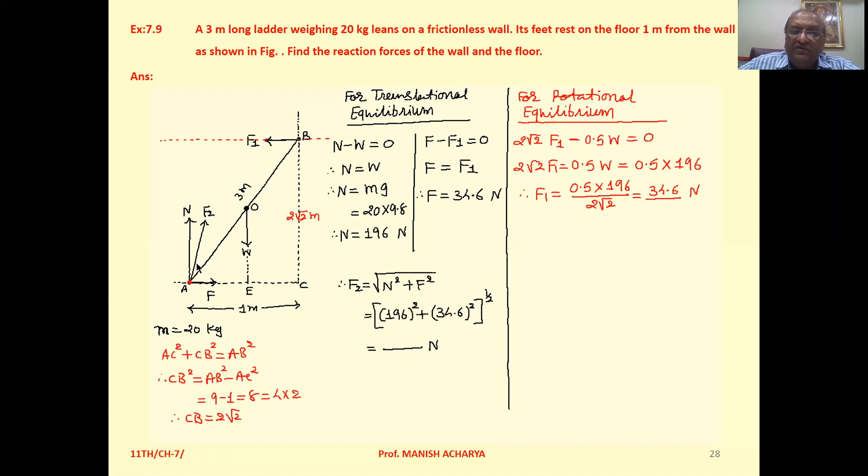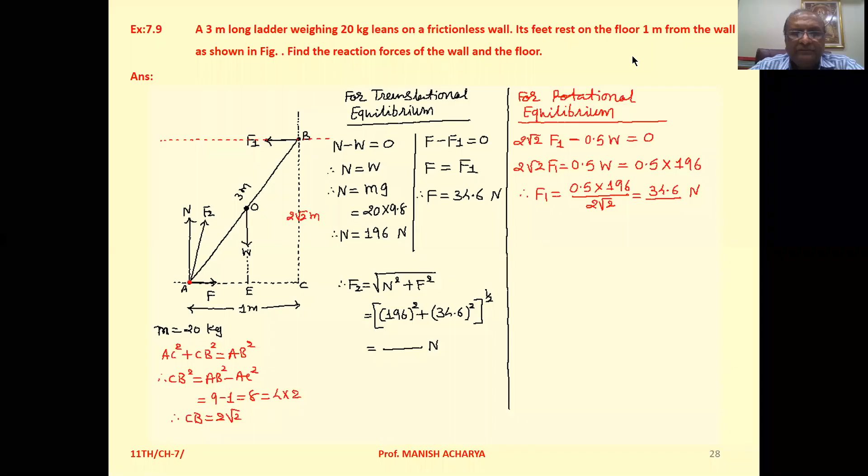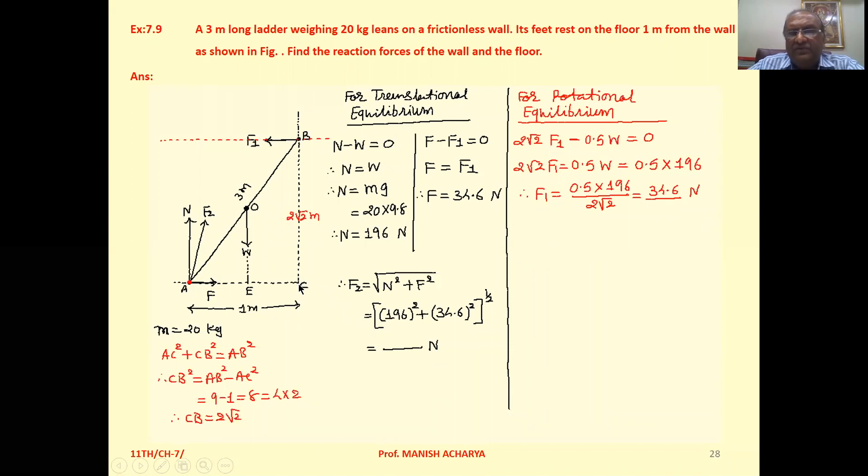Now we want to find these reaction forces F1 and F2. F2 is the resultant of this friction and this normal reaction. Clear to all of you? Now see, this end of the ladder is at 1 meter from the wall. So AC is 1 meter.